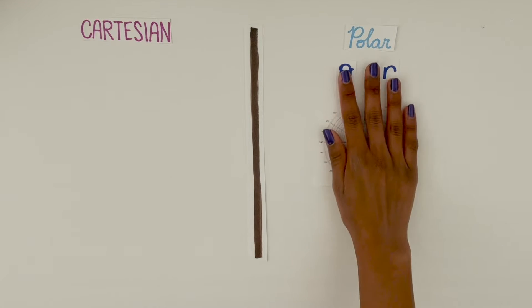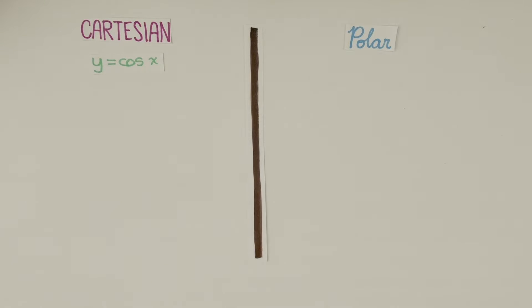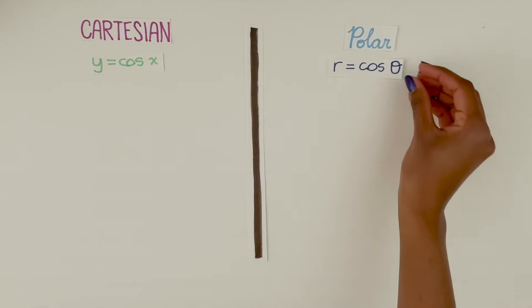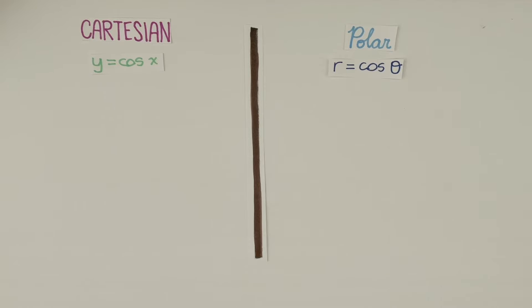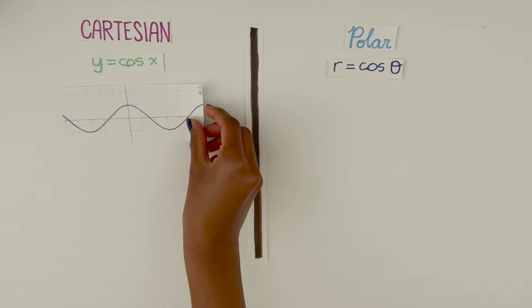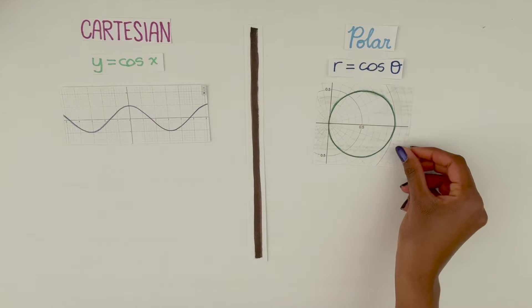Let's take an example. y equals cosine of x, and r equals cosine of theta. They seem to be the same, but in reality, their graphs are really different.